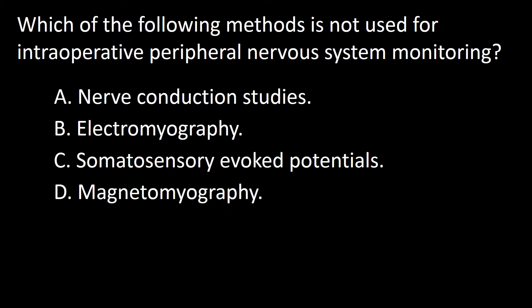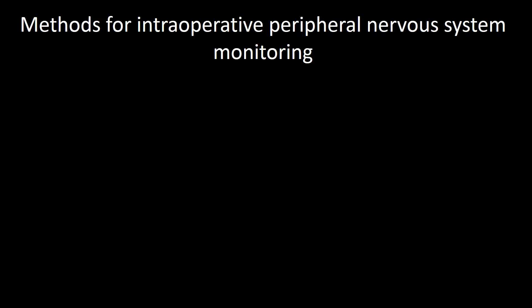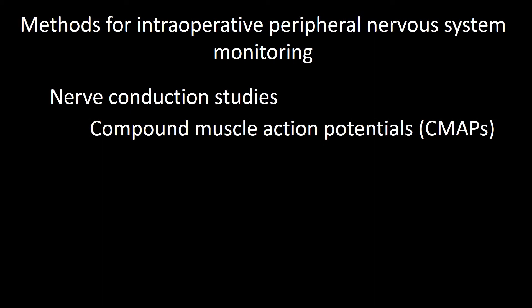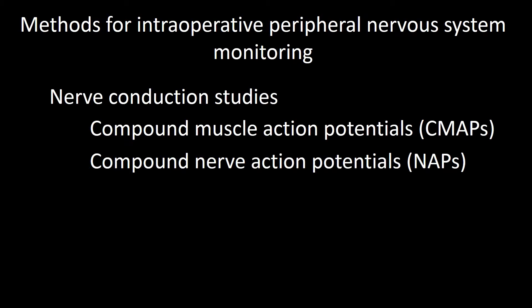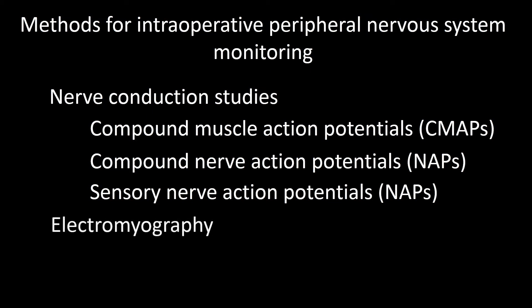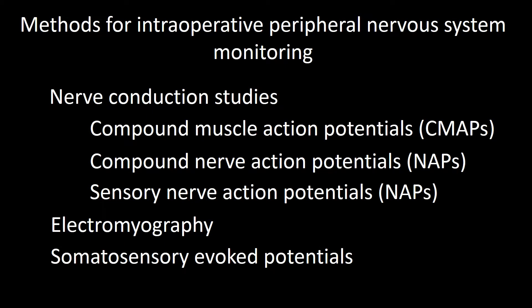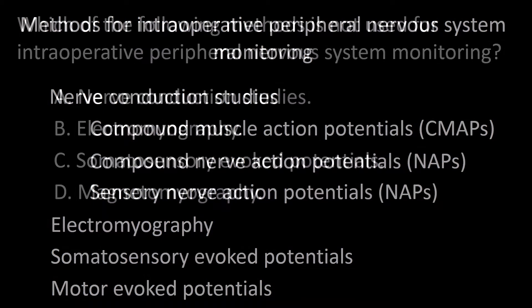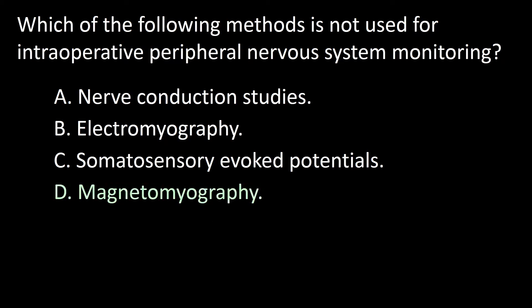Next question: which of the following methods is not used for intraoperative peripheral nervous system monitoring? A: Nerve conduction studies, B: Electromyography, C: Somatosensory evoked potentials, D: Magnetomyography. The methods used for intraoperative peripheral nervous system evaluation are nerve conduction studies — including compound muscle action potentials, compound nerve action potentials, and sensory nerve action potentials — as well as electromyography, somatosensory evoked potentials, and motor evoked potentials. So the answer to this question is D.